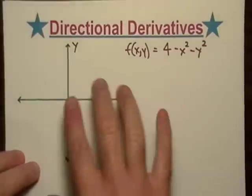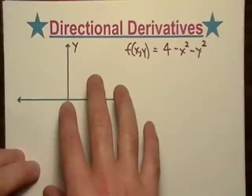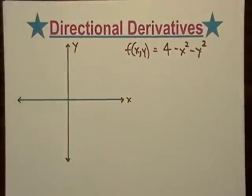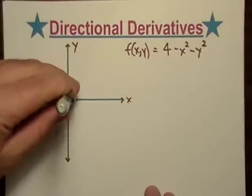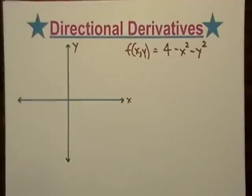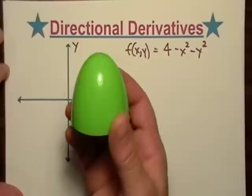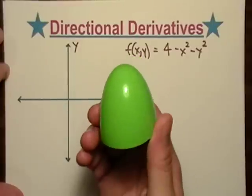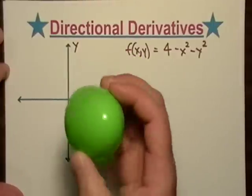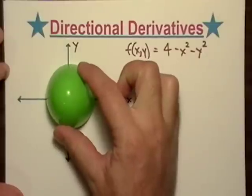Let's take this function and look at it — pretend that the z-axis is coming out of the paper like that. This function, I use it all the time because it's a very good example, it's easy to visualize. I have a shape, and we can do some stuff with it.